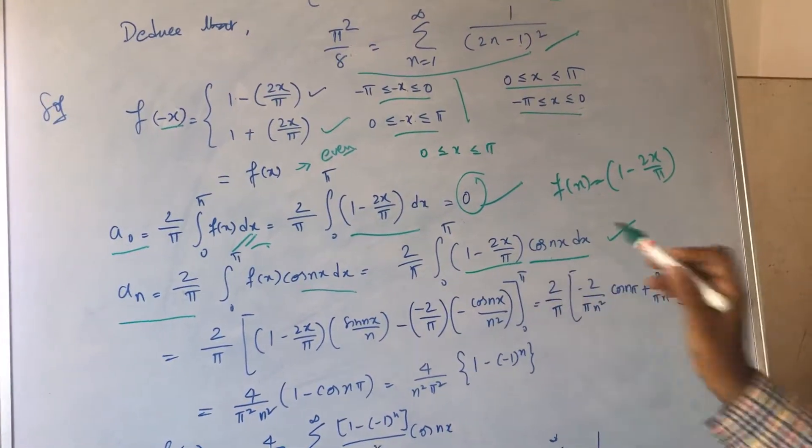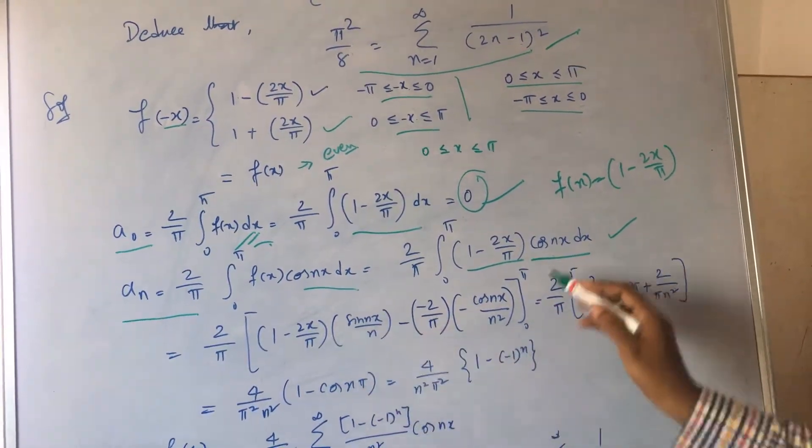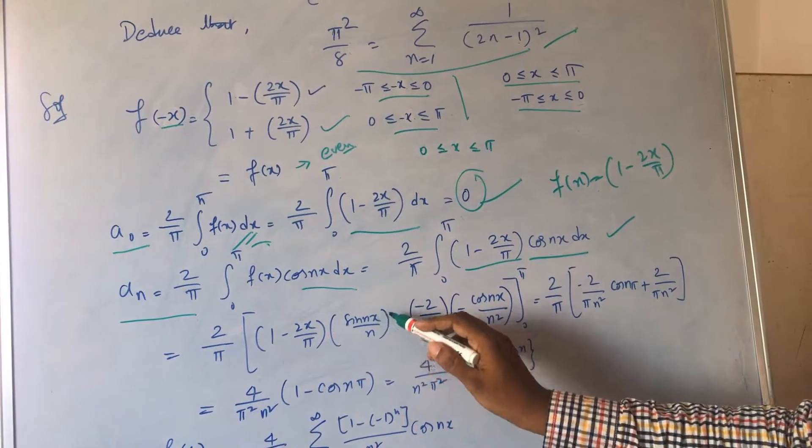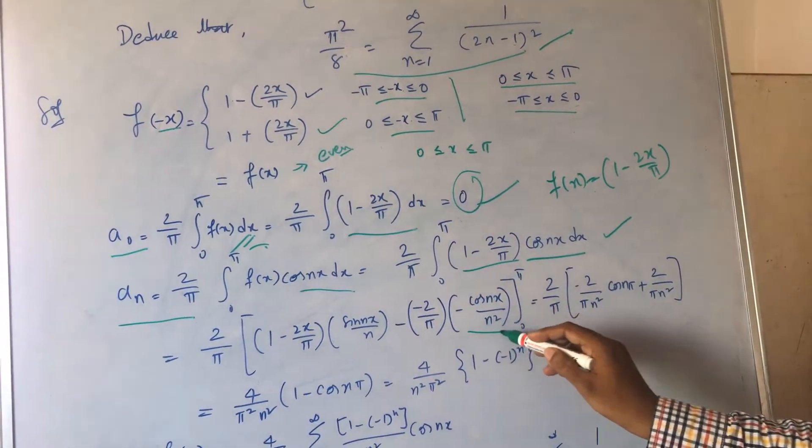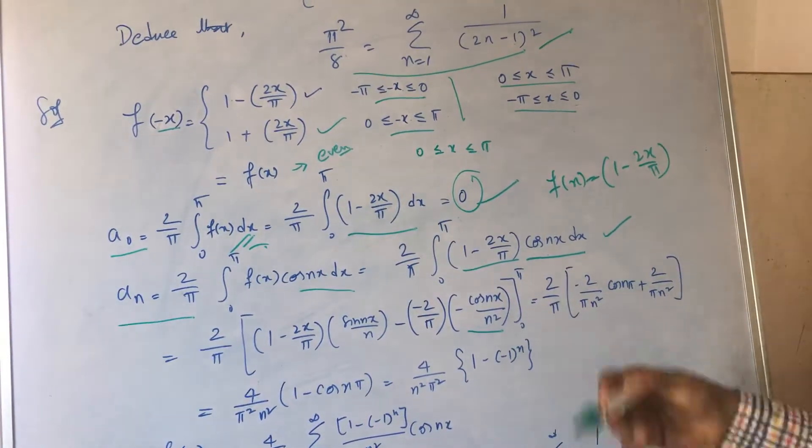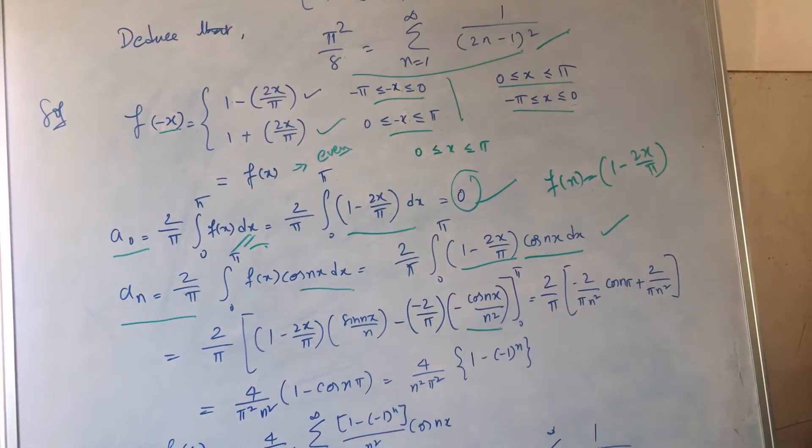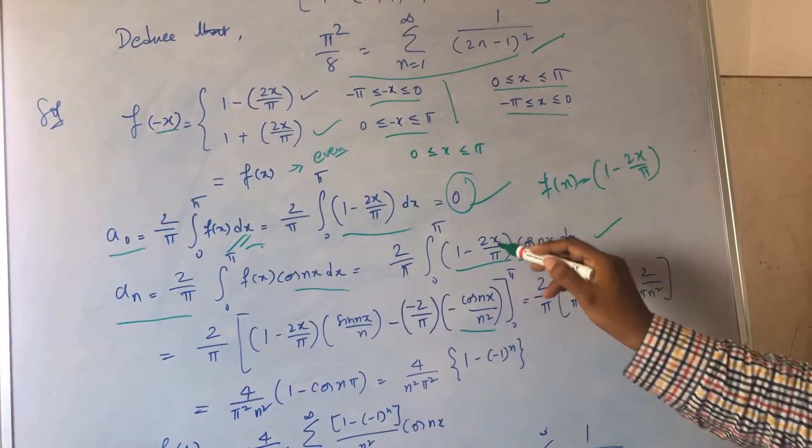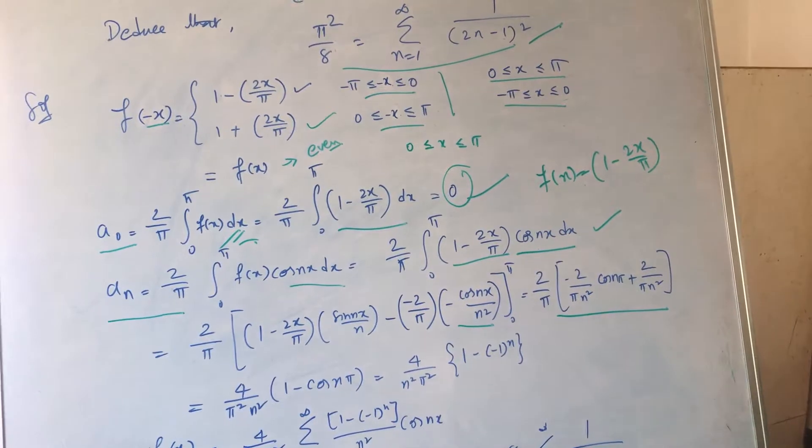Now this is in the form of u into v, so u being 1 minus 2x by π and v being sin(nx) by n, since it is an integration. Again, 2 times integration, I get this result. Sin, again integration of sin becomes cos, minus cos. That's what I have done. Likewise, the differentiation of this and this.